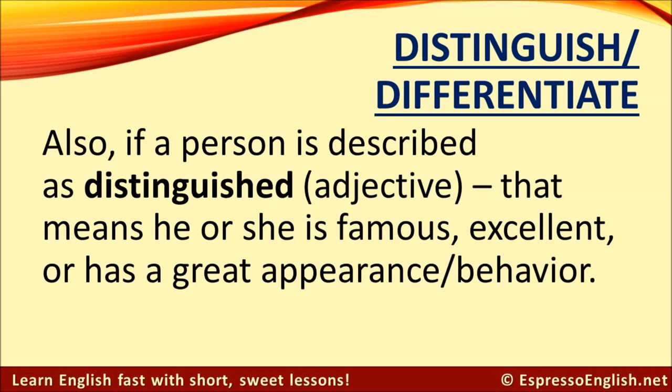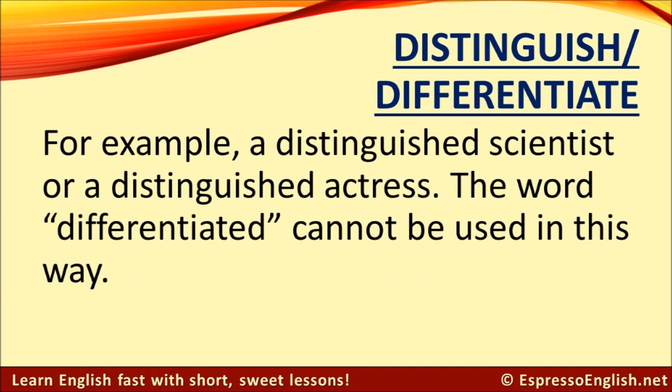Also, if a person is described as distinguished — that's an adjective — it means he or she is famous, excellent, or has a great appearance or great behavior. For example, a distinguished scientist, or a distinguished actress. But the word differentiated cannot be used in this way.